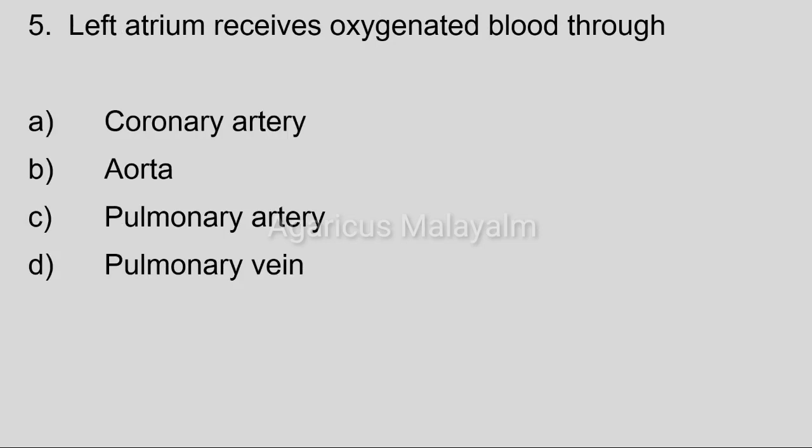Fifth question. Left atrium receives oxygenated blood through: Option A, coronary artery. Option B, aorta. Option C, pulmonary artery. Option D, pulmonary vein. Correct answer: Option D, pulmonary vein.